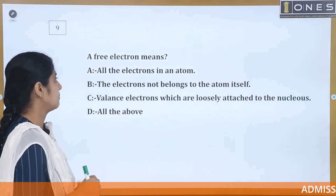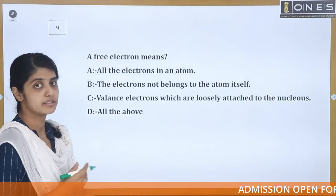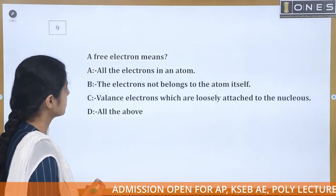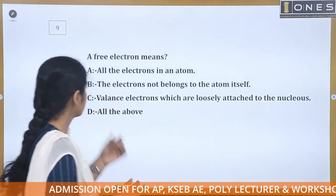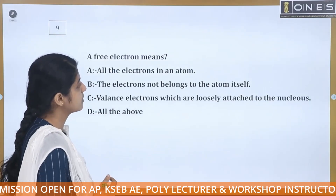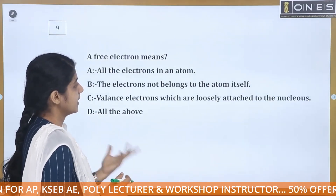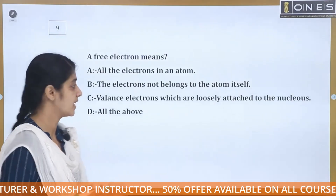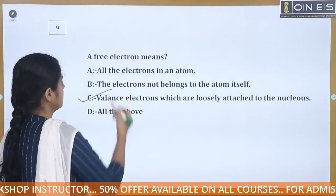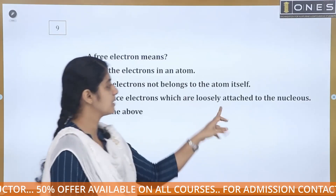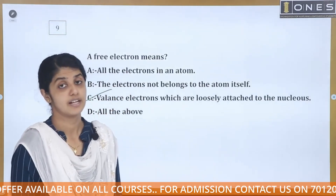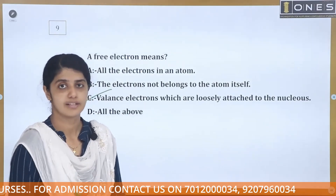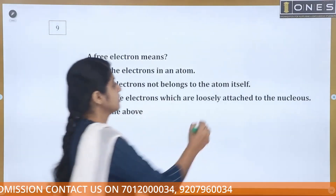The next question: what is a free electron? The definition is: valence electrons which are loosely bound to the nucleus. That means the electron is loosely bound to the nucleus — that is a free electron.